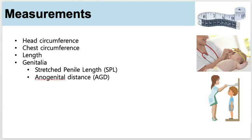Here we take a brief moment to talk about measurements in pediatric endocrinology. We measure head circumference, chest circumference, limbs, length or height, and then we also check genitalia. Two measurements that are very important are the stretch penile length or SPL and the anal genital distance or AGD.